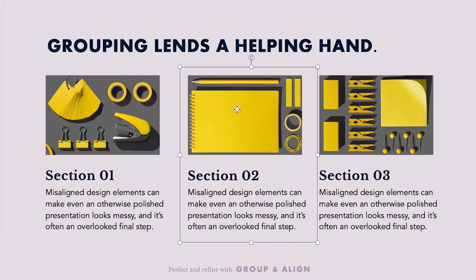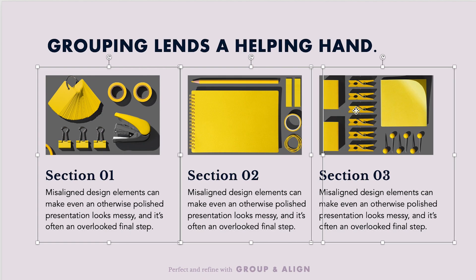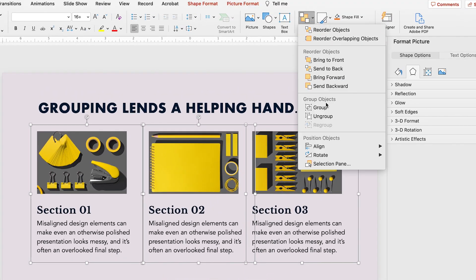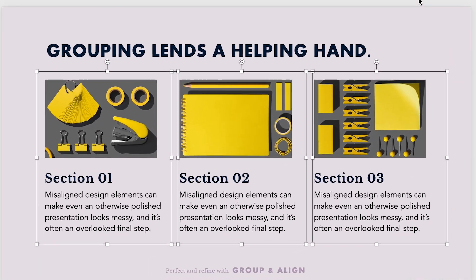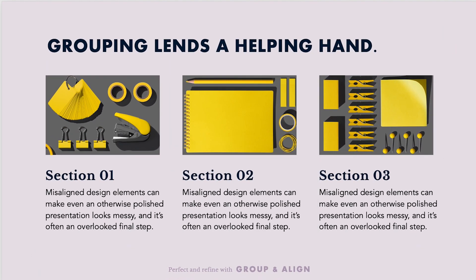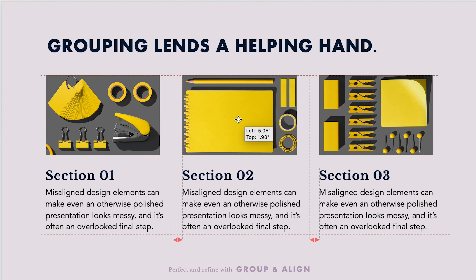So once these three sections are grouped I can select them all, go into my Align panel, and hit Distribute Horizontally, which will align the middle column perfectly between the two on either end. Another option is to select that center column and adjust it manually using Smart Guides — when it's perfectly spaced between the other two, two small red arrows will appear indicating that those two spaces are actually equal.